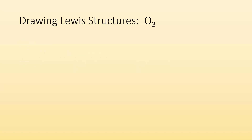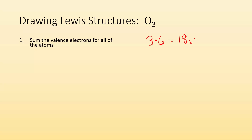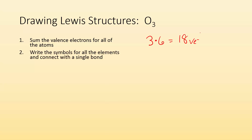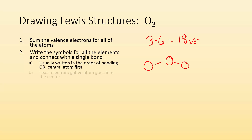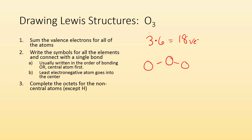So first off, drawing Lewis structures — that's how you're going to start. Take a molecule like O3. You do the same thing you do for all Lewis structures: sum the valence electrons for all the atoms. For O3, I have three sets of six, so I have 18 total valence electrons. Next, write the symbols for all the elements and connect them with a single bond — three oxygens connected with a single bond. Then complete the octets for the non-central atoms.